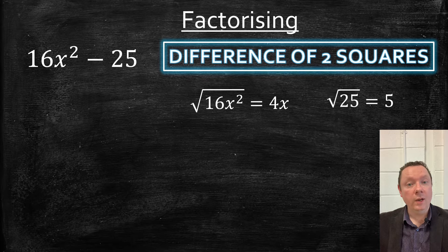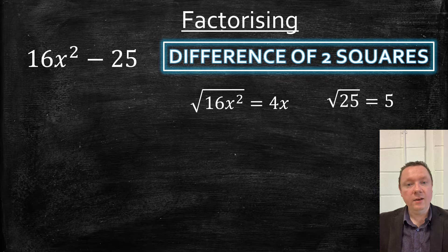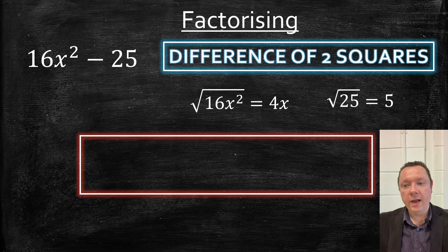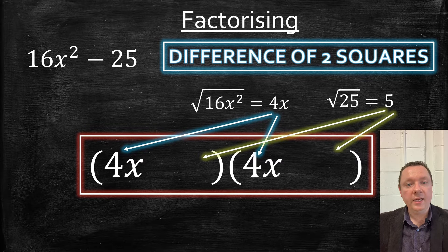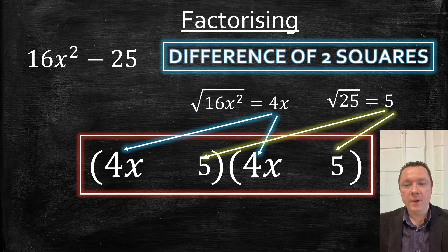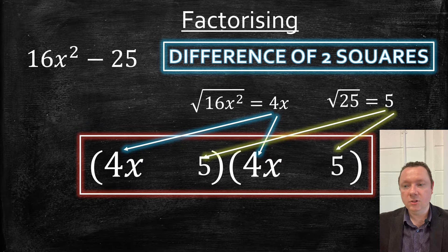So 4x and 5 go into the brackets. So here is our answer. 4x goes in the first place, 5 goes in the last place. And you get a plus in one bracket and a minus in the other. And that is a difference of two squares.